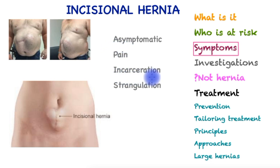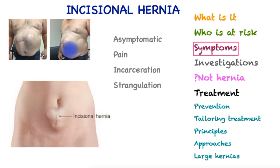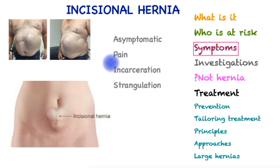The hernia sac may become incarcerated — that is, it no longer goes back inside as it tends to do in the beginning, when the lump disappears on lying down. However, if scar tissue forms, the lump may not reduce, and if there is bowel inside it is prone to obstruction.